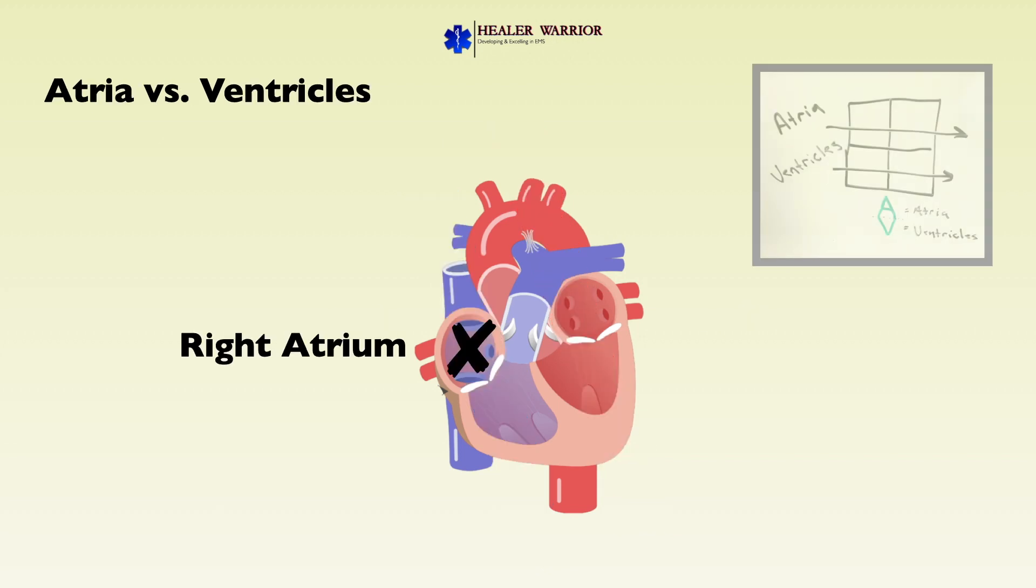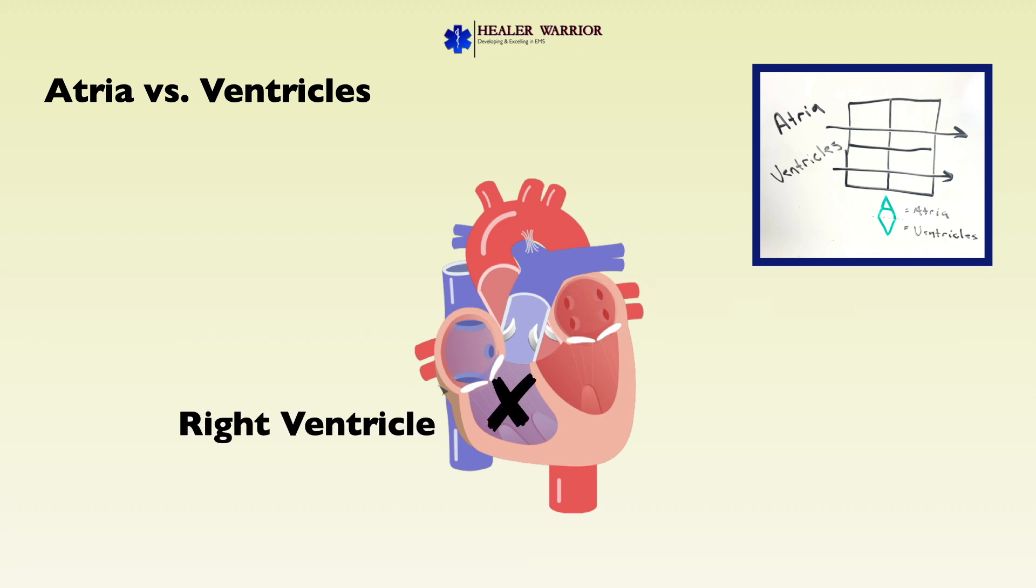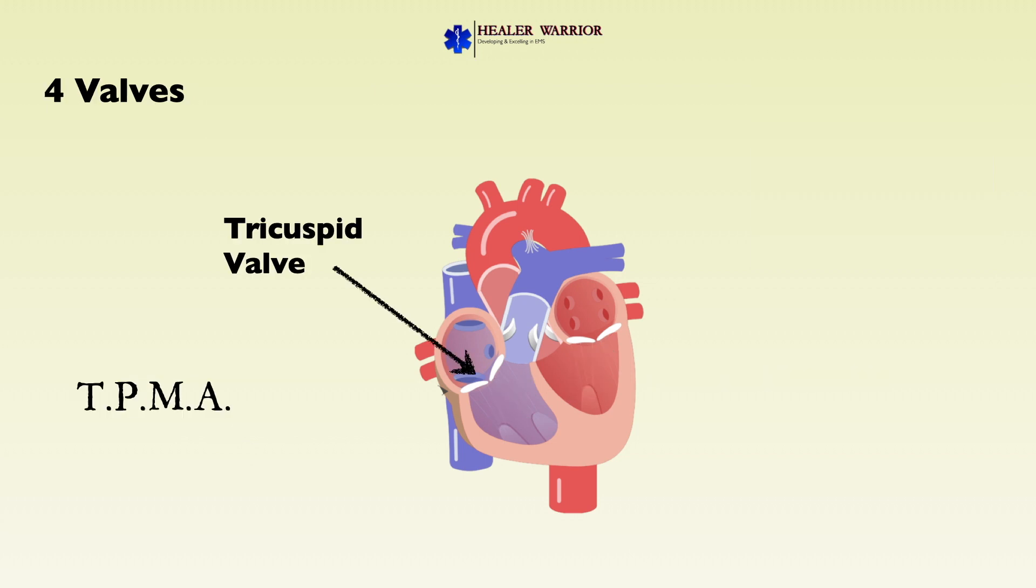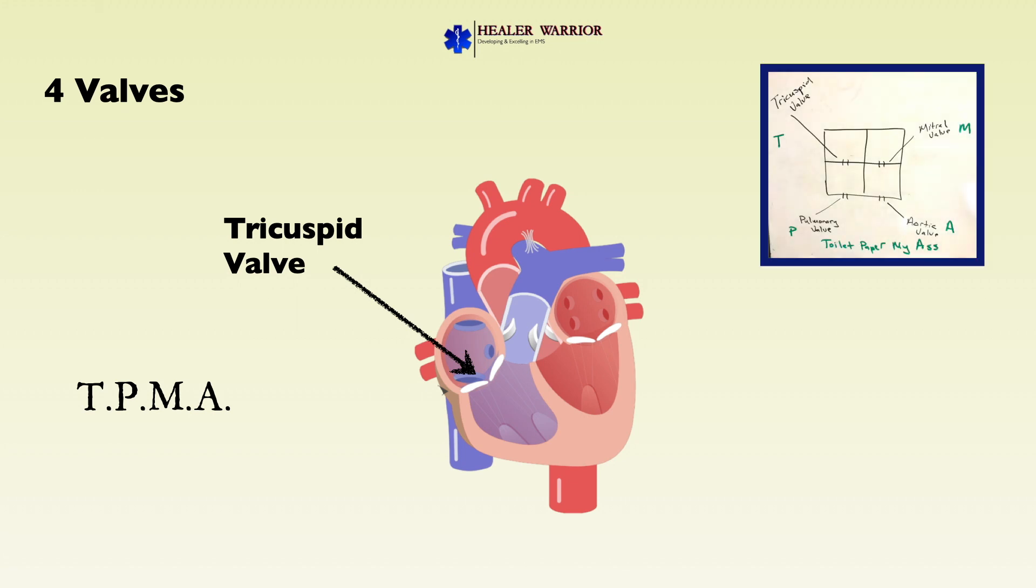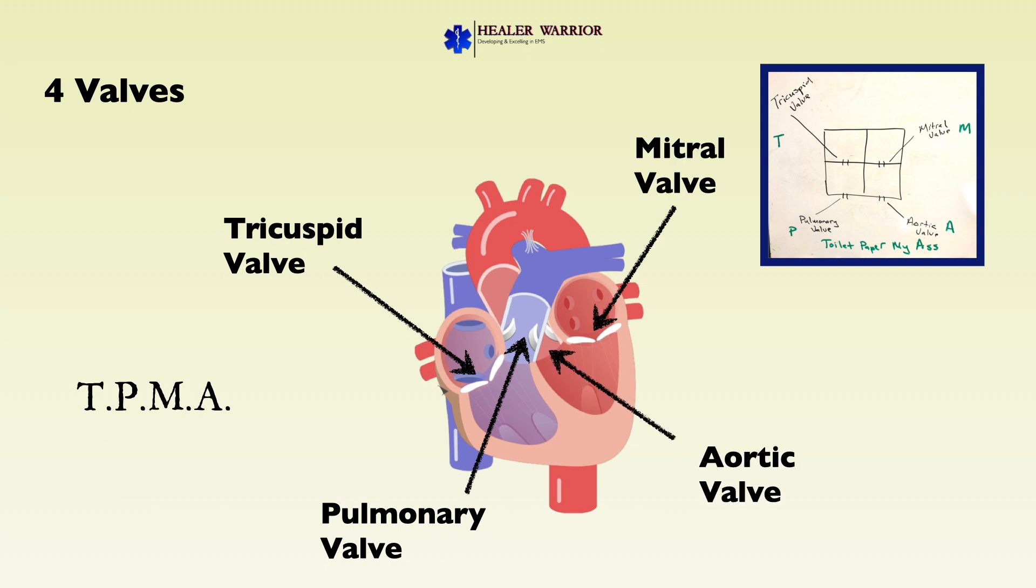Now locating the atria and the ventricles. This is the right atrium, this is the left atrium, this is the right ventricle, and this is the left ventricle. Let's locate the four valves. The purpose of the picture was to give you the idea that there are valves leaving each chamber. Here we have the tricuspid valve, here's the pulmonary valve, here's the mitral valve, and here's the aortic valve.